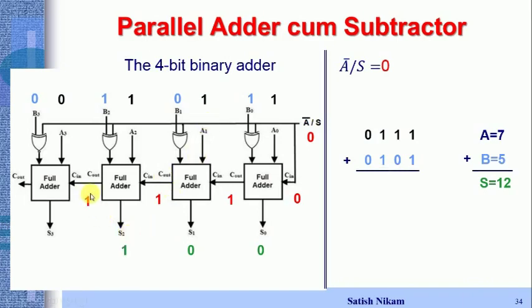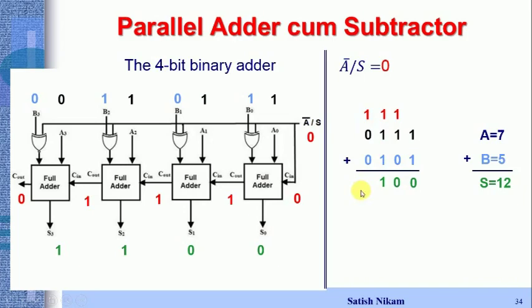For the last full adder: A3=0, B3=0, C-in=1, giving S3=1 and C-out=0. The output is 1100, which represents 12 — the correct result of 7+5=12. This confirms the circuit works correctly as a parallel adder.